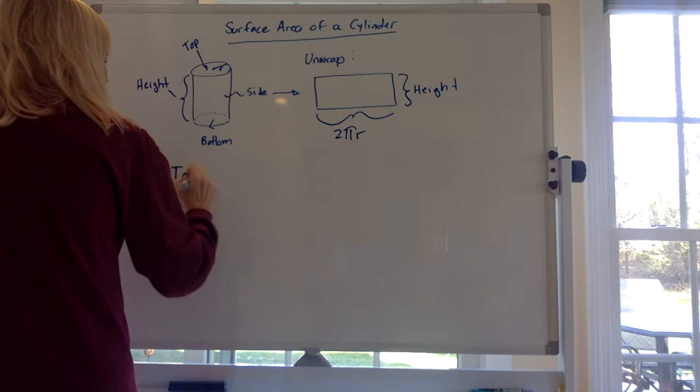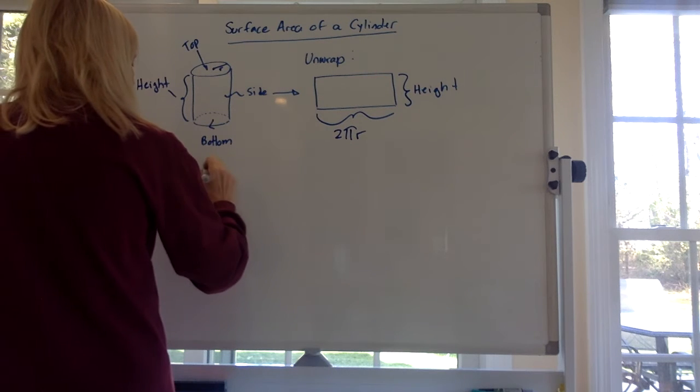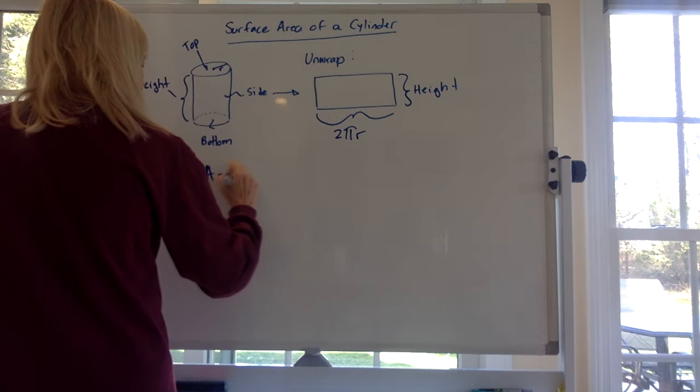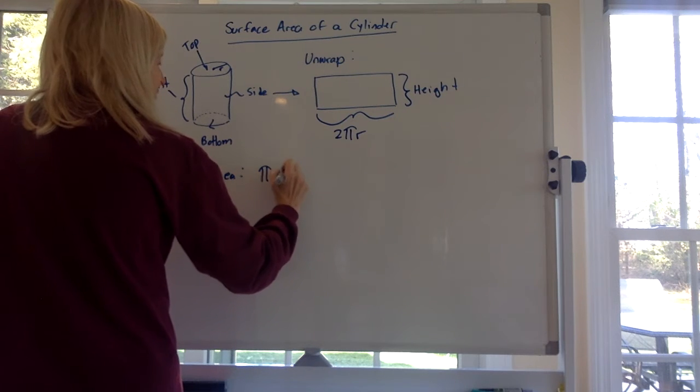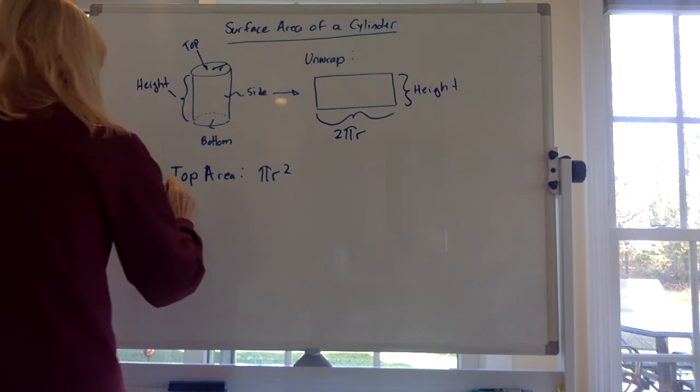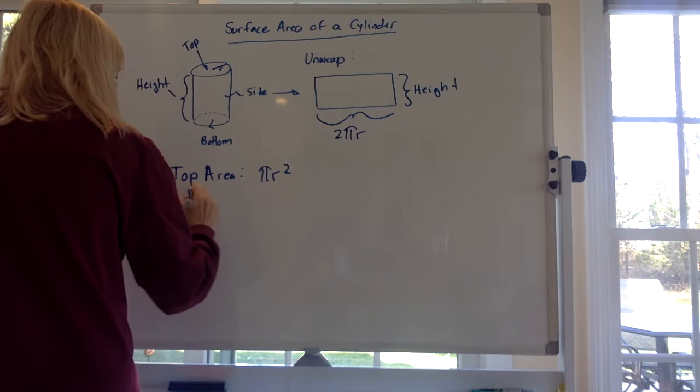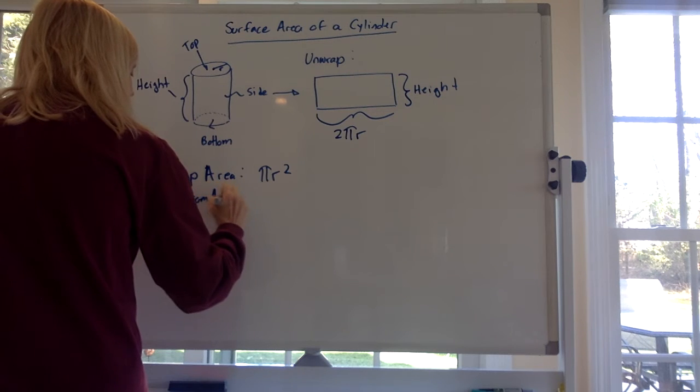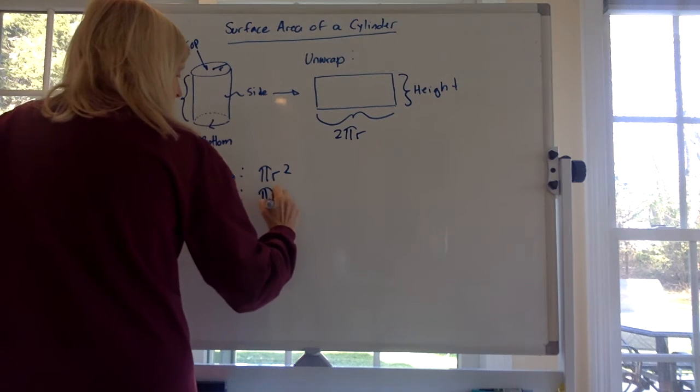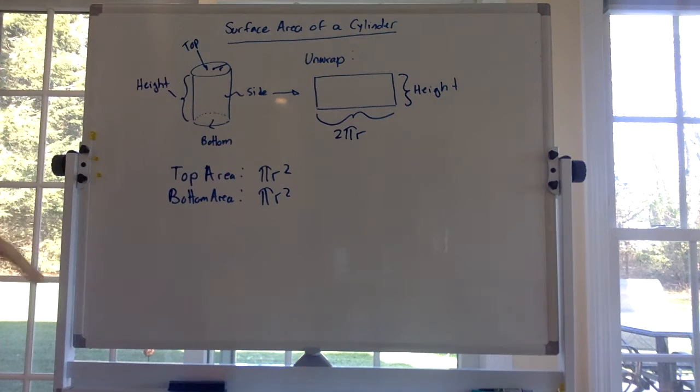So what would you have? You'd have a top area, which is πr². That's the area of a circle. You'd have a bottom area, the bottom of the can, which is also πr². So you have two of those πr², two circles.